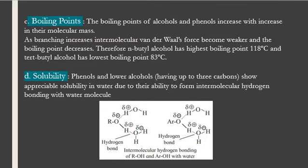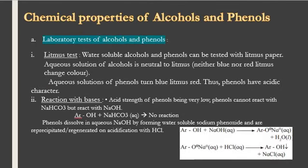Now the chemical properties. Number one, we will learn about the laboratory test of alcohols and phenols. The first laboratory test is the litmus test. Aqueous solution of alcohol is neutral to litmus — it does not change blue litmus to red or red to blue — whereas aqueous solution of phenol turns blue litmus red, meaning phenols have acidic character.